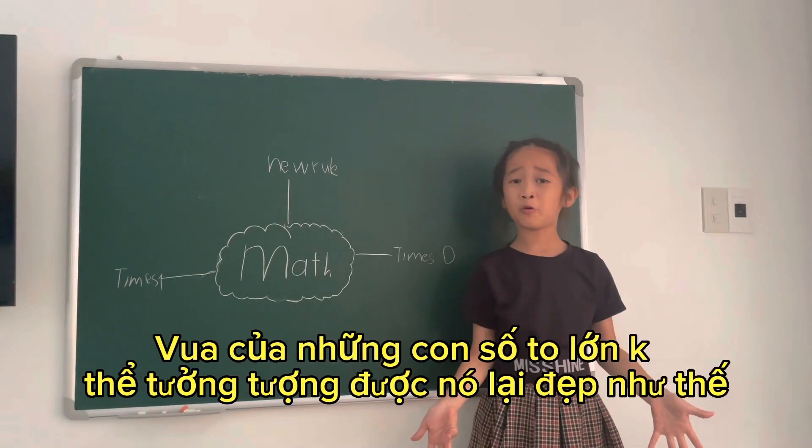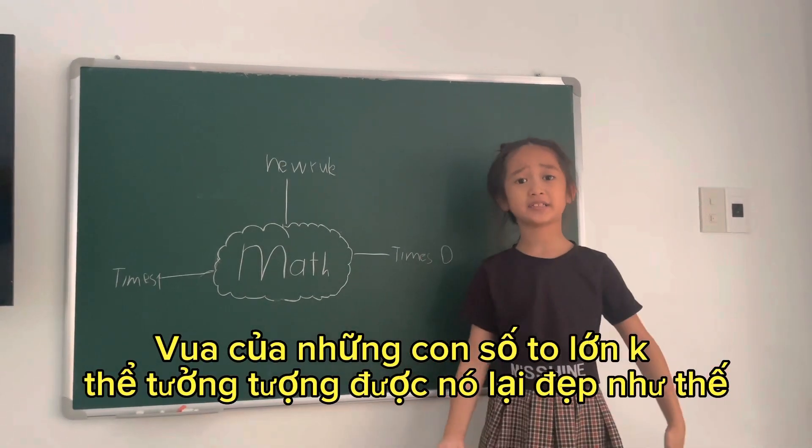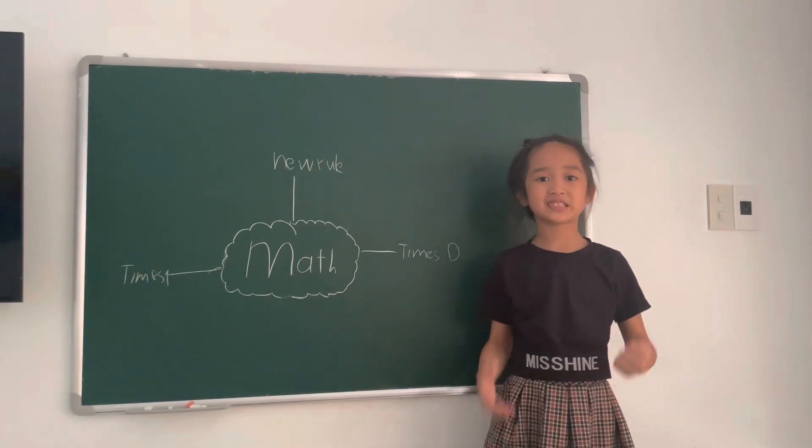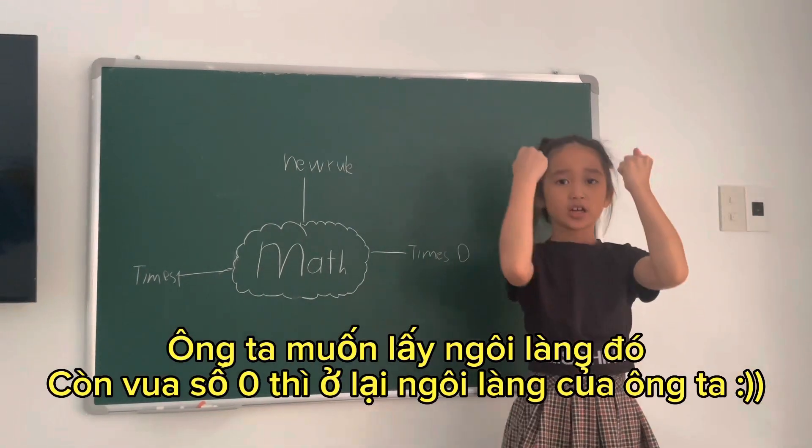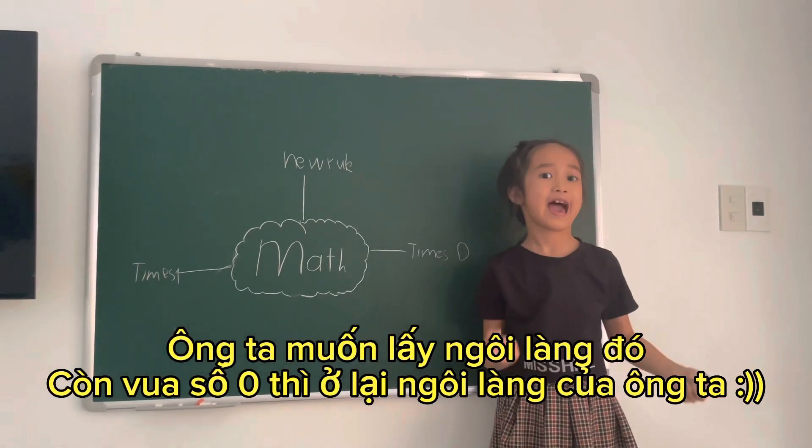That king, the king who had the biggest number of all, couldn't imagine it. He wants to take that village and King Zero can have his village.